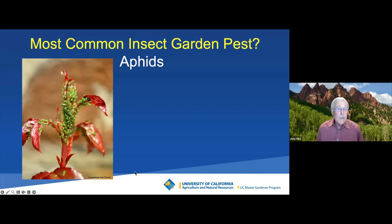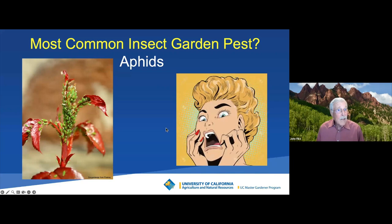Have you ever wondered — you go out in the garden and see just five or ten aphids, then a few days later there are so many it often induces a reaction of horror? Have you wondered how they go from just a few to so many? It has to do with their life cycle and their reproductive style.